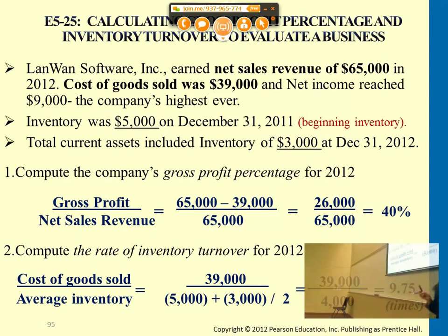Cost of goods sold is the total amount of inventory expense incurred this season — $39,000. We're trying to understand the relationship between these two. The higher this is, the quicker a company is turning purchased inventory into sales. The result is 9.75 times, meaning cost of goods sold is 9.75 times the average level of inventory.